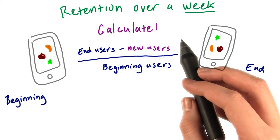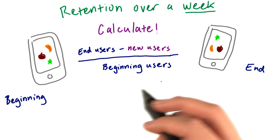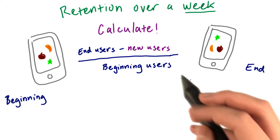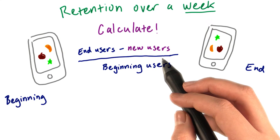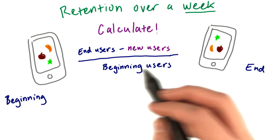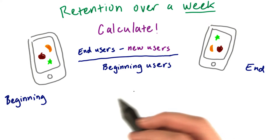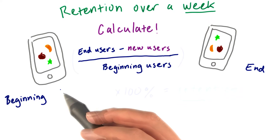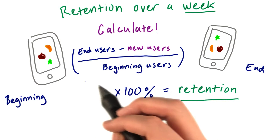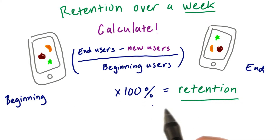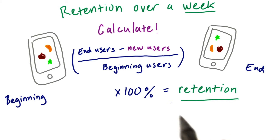To calculate this, you need to look at the users at the end of the week, minus any of the newcomers who joined in the middle of the week, all divided by the number of users that started at the beginning of the week. Then multiply all this by 100 to get a percentage, and this is going to be your retention for the week.